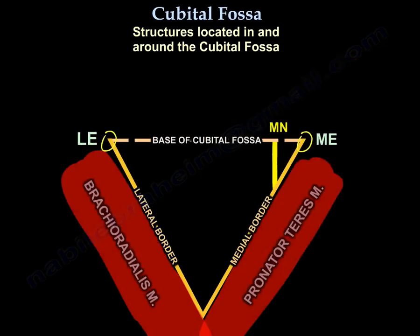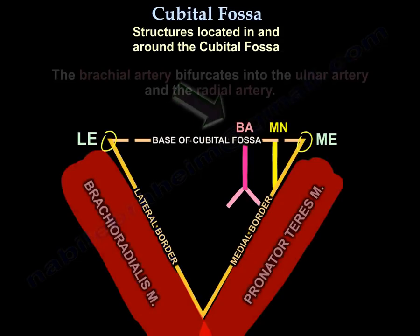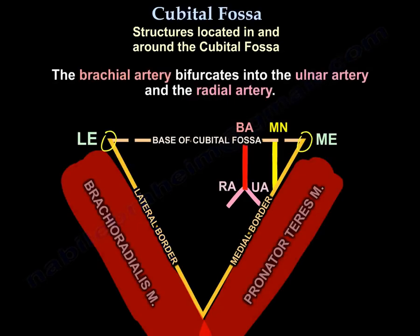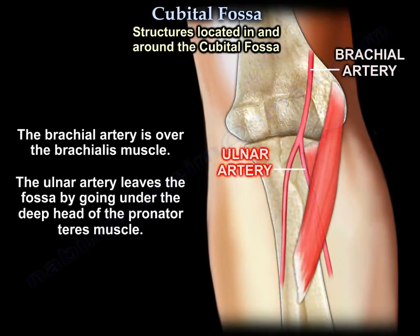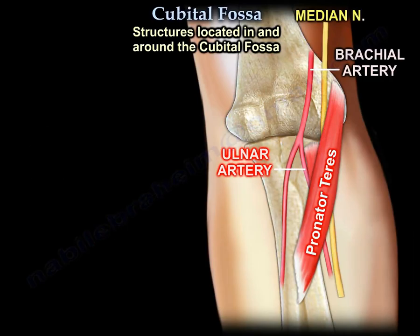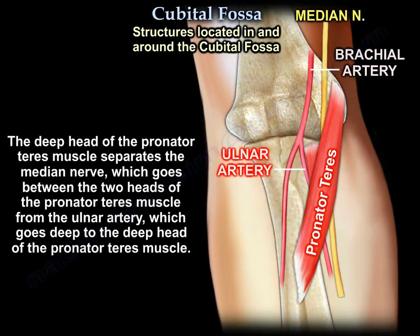The second structure is the brachial artery and its bifurcations — the ulnar artery and the radial artery. The brachial artery is over the brachialis. The ulnar artery leaves the fossa by going under the pronator teres, under the deep head. The deep head separates the median nerve, which goes between the two heads of the pronator teres, from the ulnar artery, which goes deep to the deep head of the pronator teres.